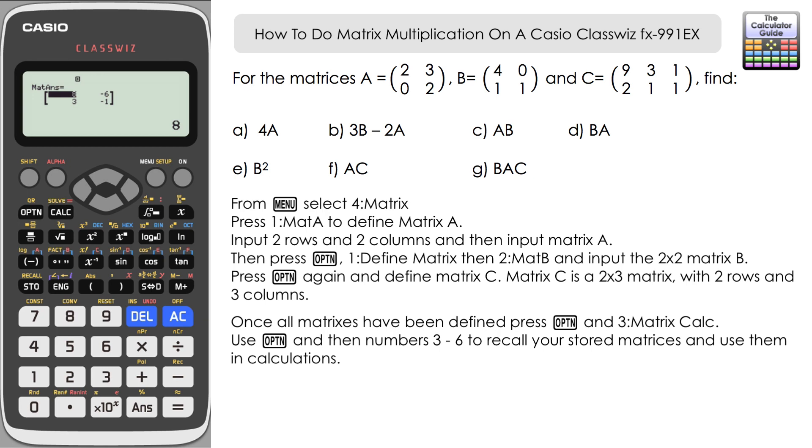Now for parts C and D, we've got A times B, matrix A times matrix B, and then B times A. Now one thing that you should understand is that matrix multiplication is not commutative, which means we're going to get a different result for AB in part C than we do for BA in part D.